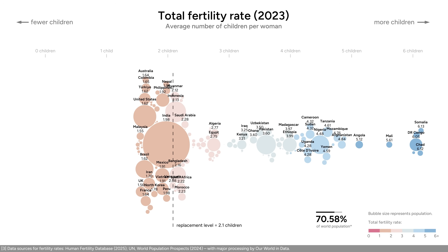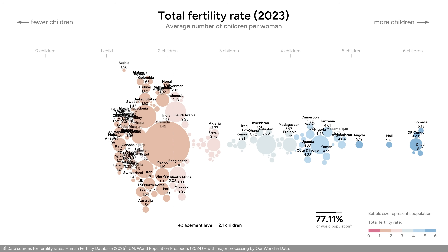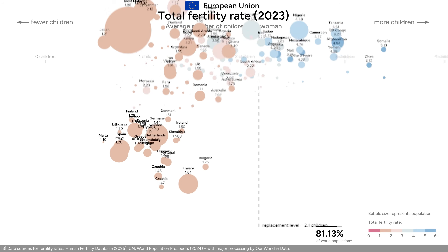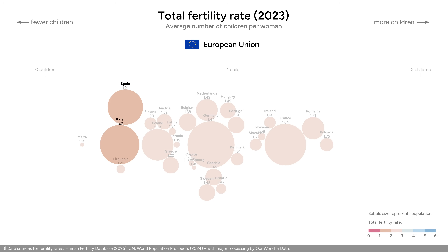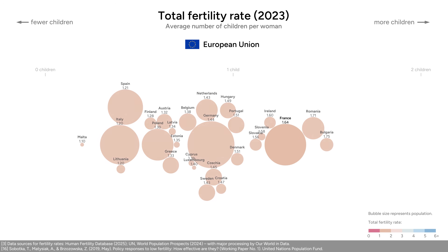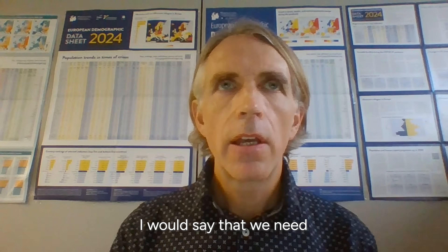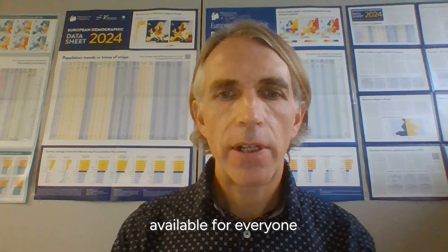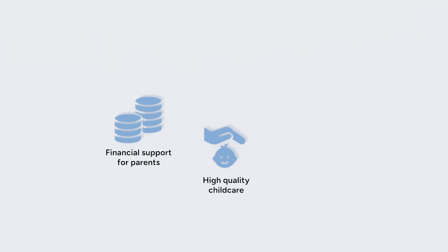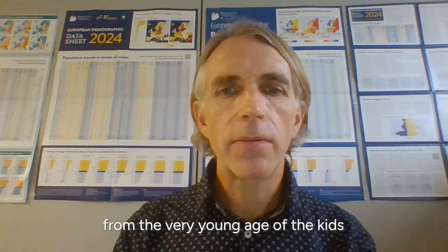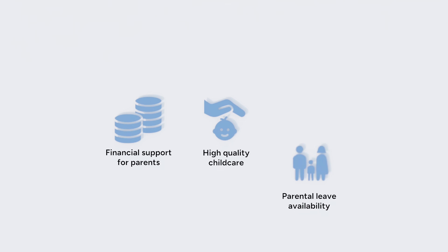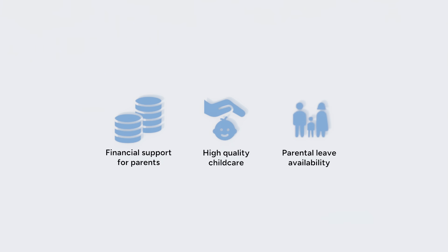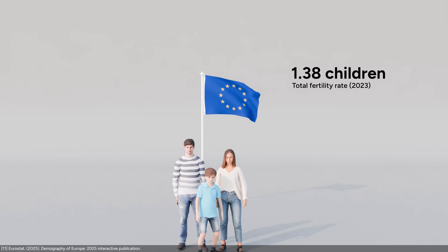If we lower the fertility rate to one child, we get countries from South America, East Asia, and a lot of European countries. I'm going to choose the European Union because there's good data for these countries. Italy and Spain have low fertility rates, around 1.2 children. On the other end, France is considered by some a positive case of higher fertility rates, and this has been linked to successful policies. As a whole, the EU has a fertility rate of 1.4 children per woman, lower than the US.